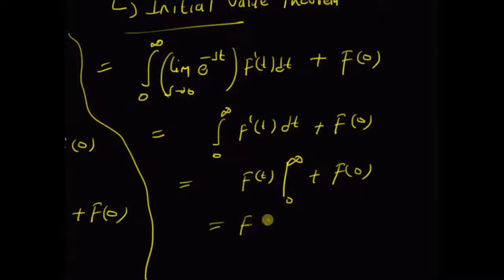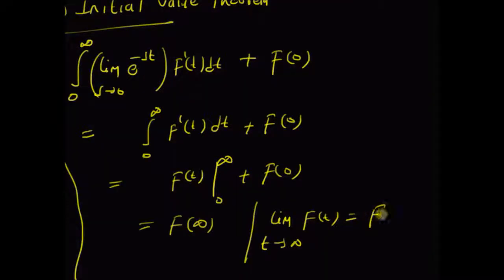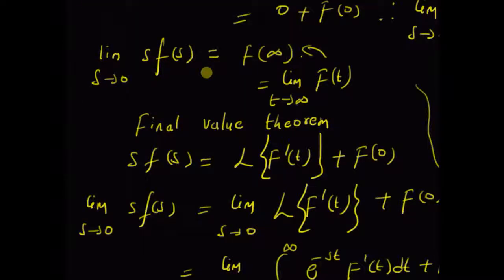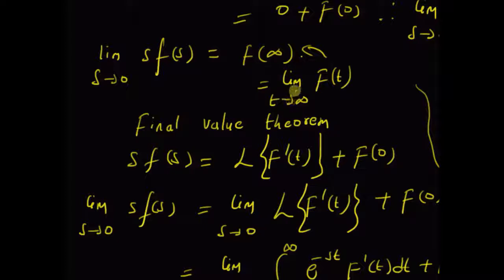Clearly this equals f(∞) − f(0) + f(0), and the limit as t tends to infinity of f(t) equals f(∞). Therefore, the limit as s tends to 0 of s·F(s) becomes equal to the final value of the function f(∞), which can also be written as the limit as t tends to infinity of f(t). This completes the proof for the final value theorem.